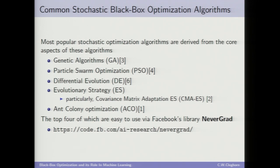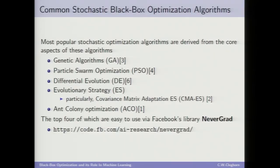I bring up these algorithms because in our community, for the optimization side of things, good libraries are not as prevalent as in machine learning. However, Facebook was nice enough to release a library called Nevergrad, which contains the top four of those algorithms implemented for you. The API is pretty new and didn't appear to have any bugs, but it is new — just keep that in mind.